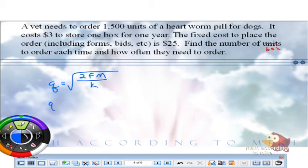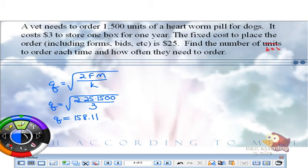We're going to go blue. So that means Q would be the square root of 2F capital M over K. What's our F? What's our M and our K? Three. What is the square root of 2 times 25 times 1,500 divided by 3? Well, we can't order .11 of a box. Companies don't like that too much. So we have two options. Either we order 158 or we order 159. So of those two we have to figure out which gives us the least total cost. So what happens is now this comes into play, this function here. We have to figure out the total cost. Plug in 158, plug in 159, and see which one is the least.